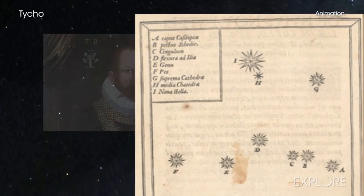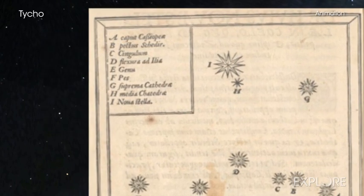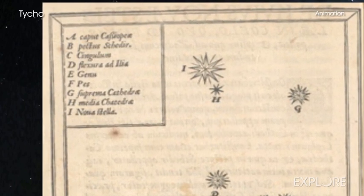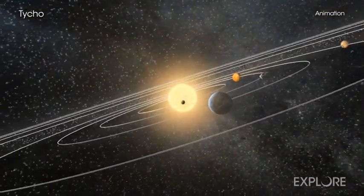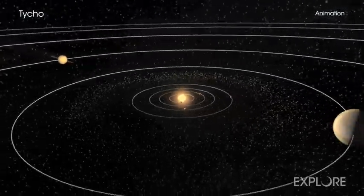Adding fuel to the intellectual fire that Copernicus started, Tycho showed this new star was far beyond the moon and that it was possible for the universe beyond the Sun and planets to change.